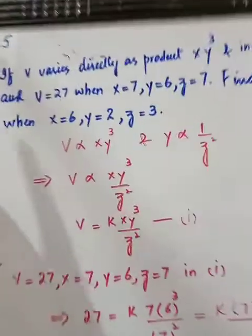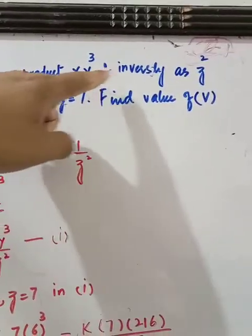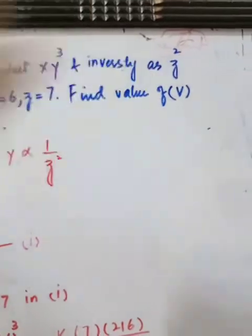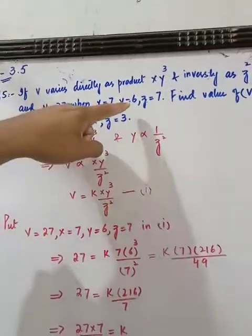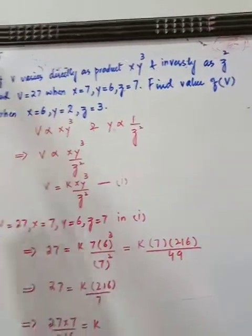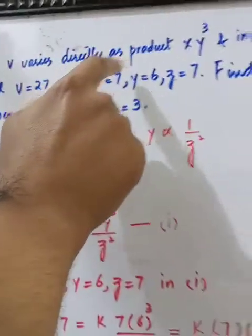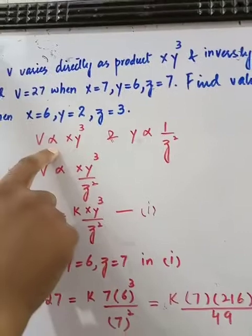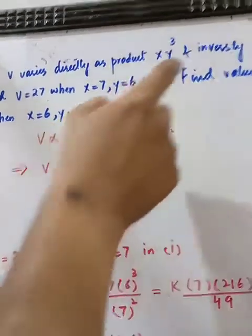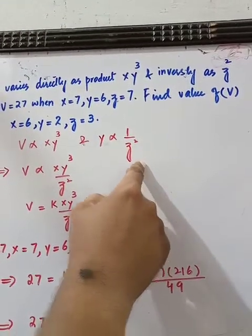Question number 5, method is same. If V varies directly as product x y cubed and inversely as z squared, and inversely as z squared, we have given two values. This value set is, find value of V when this. Simple criteria. The first question is V directly as product of x y cubed, so V is directly proportional to x y cubed.